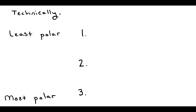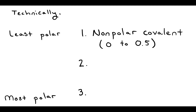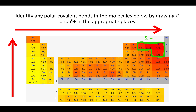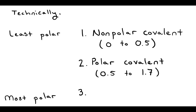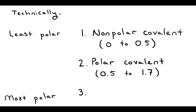For a quantitative approach: a nonpolar covalent bond has an electronegativity difference of 0 to 0.5, a polar covalent bond is between 0.5 and 1.7, and an ionic bond is greater than 1.7.